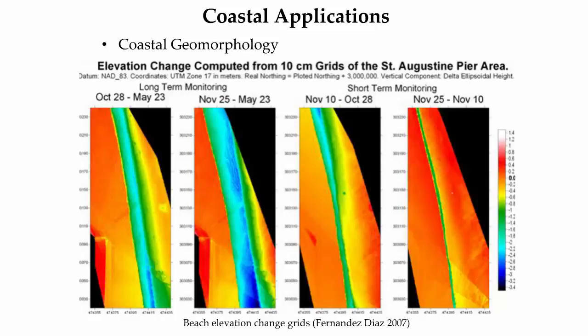Coastal geomorphology is a coastal application domain that has benefited greatly from LiDAR-derived products, offering enhanced elevation accuracy and increased coverage density over traditional beach profiling methods. With high-resolution LiDAR data collections, undersampling the beach profile with RTK GPS is no longer an issue. The graphic depicts a temporal study of beach elevation change grids in St. Augustine, Florida, with red indicating areas of sand accretion, orange areas indicating minimal change, and blue indicating erosion areas. Using this data, coastal scientists and engineers can better understand the dynamics of shifting sand resources.